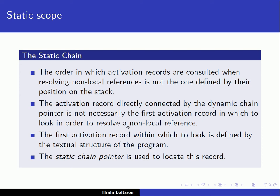Here we're talking about static scope, where the static scope is associated with the textual structure of the program. When we look at the program, we can figure out the static scope rules or the environment in place at any given point. So the first activation record within which to look is defined by the textual structure of the program, and we use the static chain pointer to locate this record. We have both a dynamic chain pointer and a static chain pointer inside the activation record, given that we can have nested blocks in the language under question.